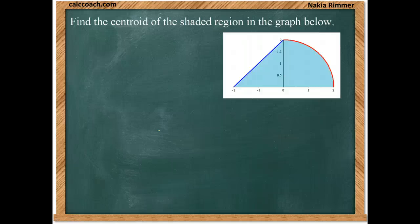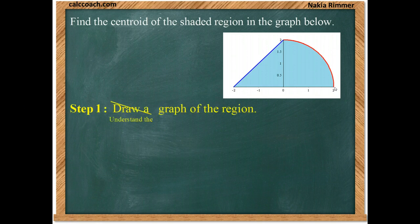Find the centroid of the shaded region in the graph below. We have a triangle that goes from negative 2 on the x-axis up to 2 on the y-axis, then a circle that goes from 2 on the y-axis down to 2 on the x-axis. We'll cut the region into two different parts: part A will be the line, and part B will be the quarter circle.